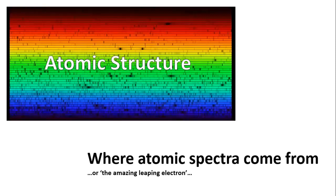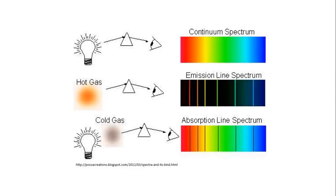So, to recap from the last video. In the 19th century, various scientists found that elements absorbed and emitted light at certain characteristic wavelengths. Each element had a distinctive pattern of wavelengths that was like a fingerprint for that element.